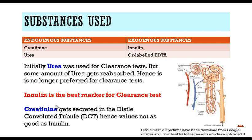Inulin is the best substance for clearance studies. Creatinine is an endogenous substance so we use it quite often, but there is one problem: a little bit of creatinine gets secreted in the distal convoluted tubules, hence the values are not as good as inulin. The gold standard for clearance test is inulin. The best method to do clearance test in a routine day-to-day setting is creatinine clearance, the difference being that a little bit of creatinine gets secreted in the distal convoluted tubules.